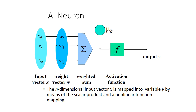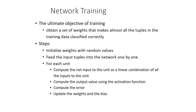We will see the activation function and bias in the next class. Regarding network training: the ultimate objective of training is to obtain a set of weights. We do training in order to learn the actual weights so we can build the model. The steps are: first, initialize weights with random values since we don't know the actual weights. Second, feed the input tuples into the network one by one — we do not feed all values at once.